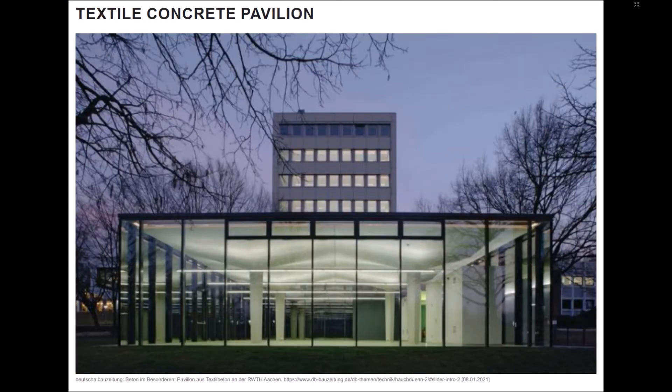In the course of a research project at RWTH Aachen University, a thin-walled, load-bearing concrete shelf structure was implemented. The pavilion consists of four individual prefabricated textile concrete parts that have been reinforced with textile carbon fiber. The shelves are supported on four reinforced concrete pillars. After the shelves were installed, the pavilion was given a glass facade and is used as a seminar and event room.